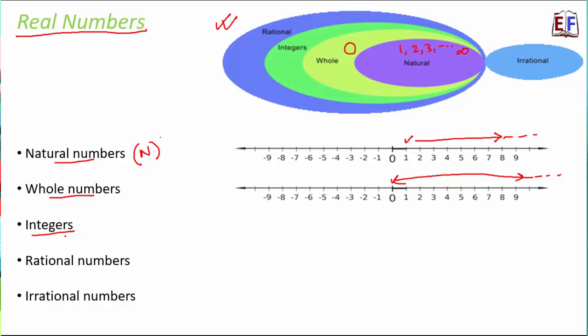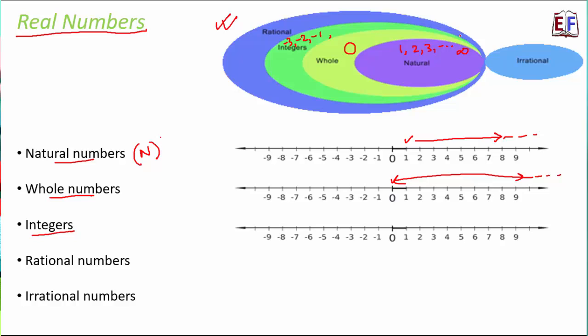The third type is integers — all natural numbers, all whole numbers, and also the negative numbers. So integers include negative numbers like −1, −2, −3 and so on, plus zero, plus all positive numbers. On the number line, all numbers — negative, zero, and positive — are integers.